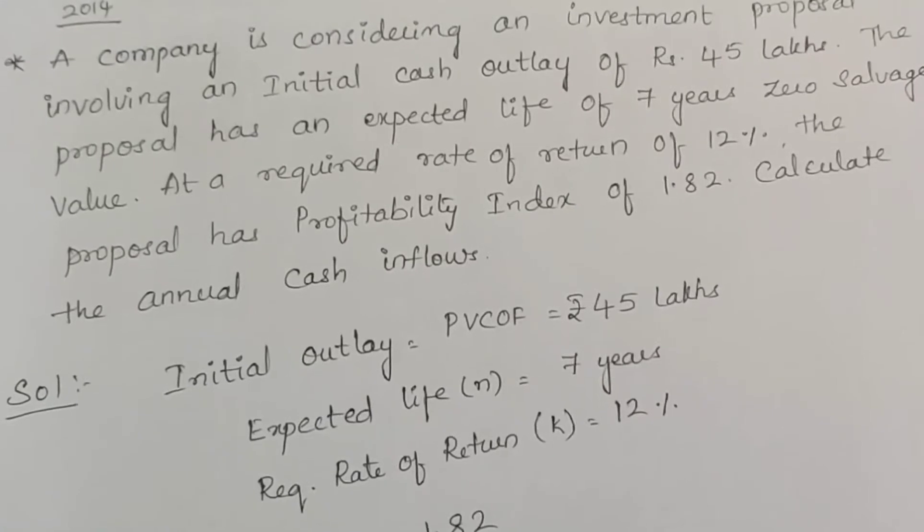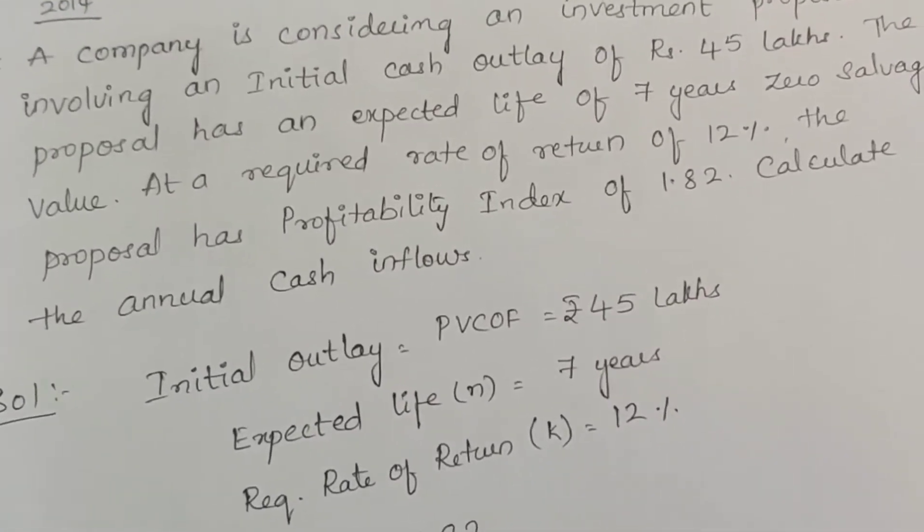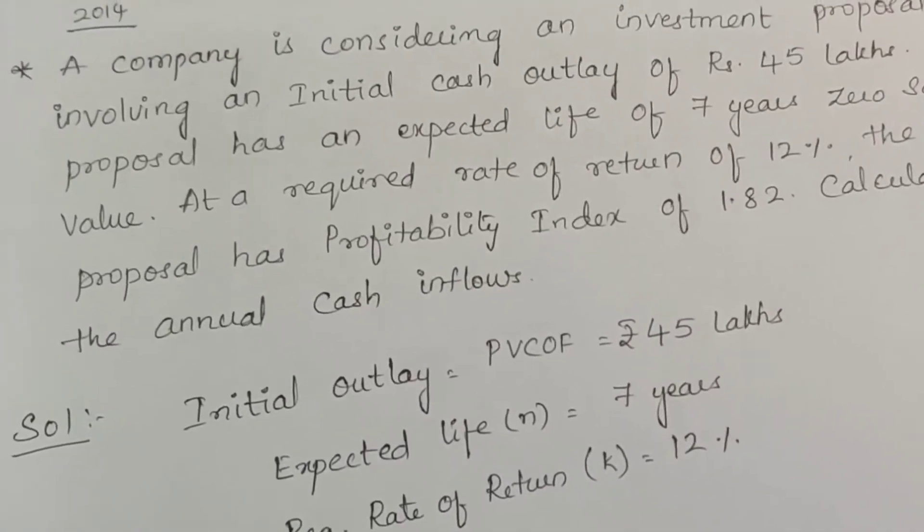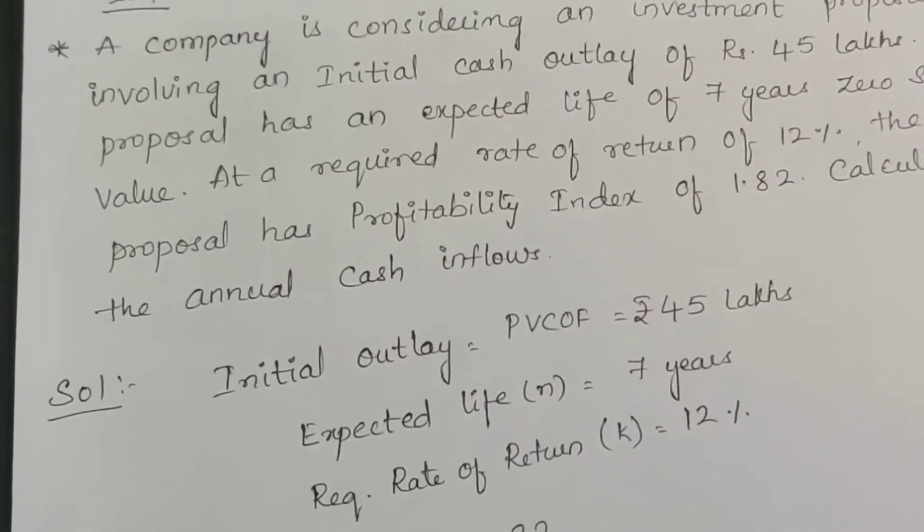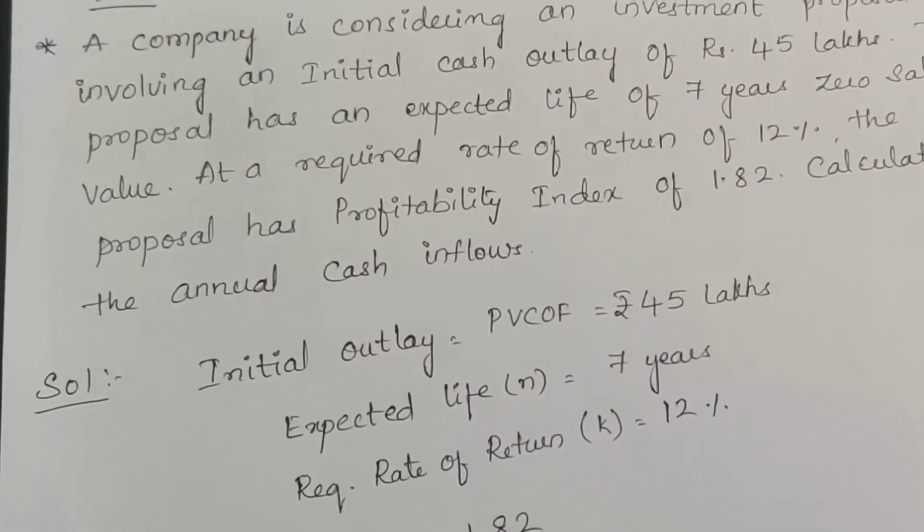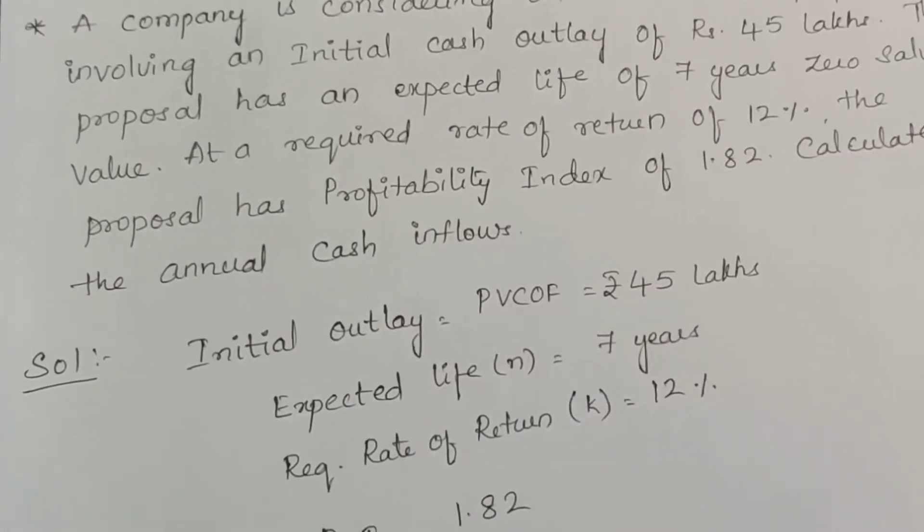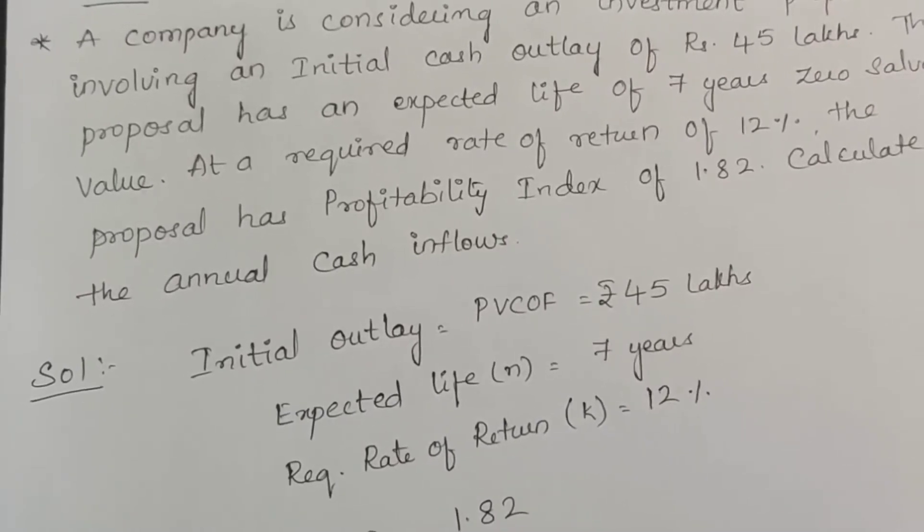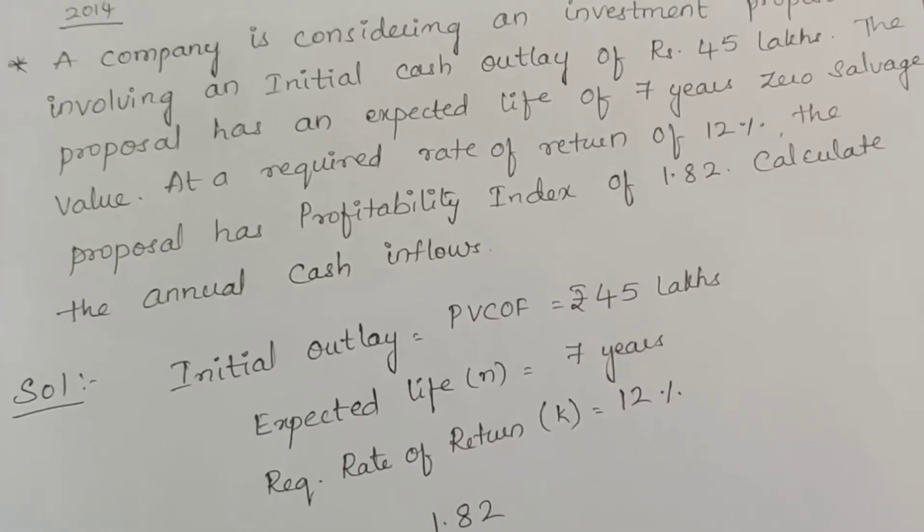A company is considering an investment proposal involving an initial cash outlay of Rs. 45 lakhs. The proposal has an expected life of 7 years, zero salvage value. At a required rate of return of 12 percent, the proposal has profitability index of 1.82. Calculate the annual cash inflows.